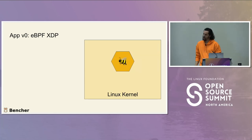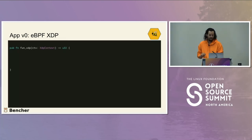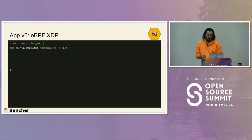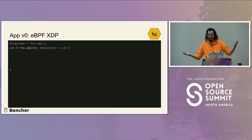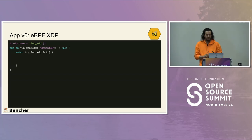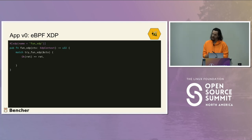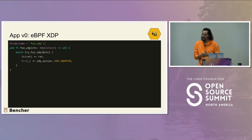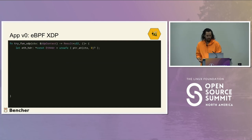On the eBPF side, this is a function in Rust that takes in the context the kernel provides. We use a macro for AYA to tell it this is an XDP program, and we name it funXDP. We have a helper function called tryFunXDP. Based on what it returns: if we get an OK, we return that value; if we get an error, we abort — which is a way of telling the kernel something bad happened.